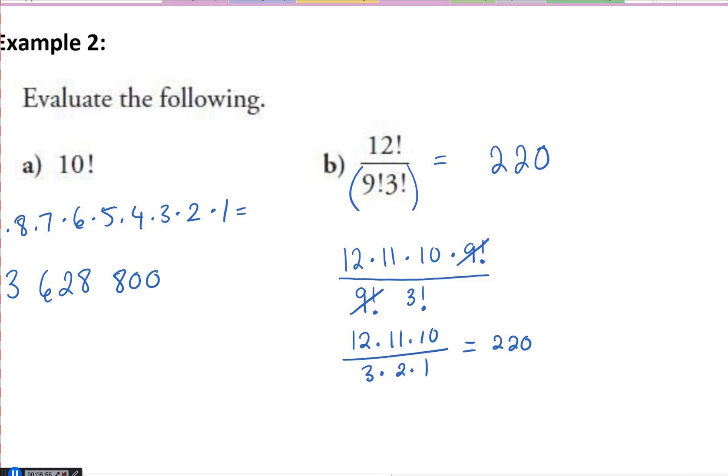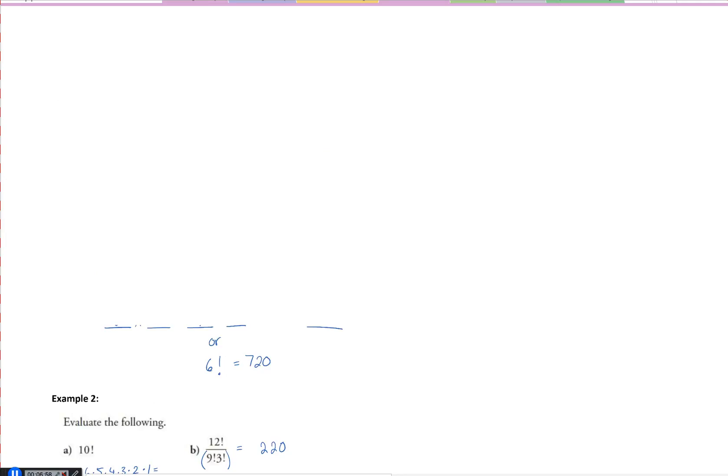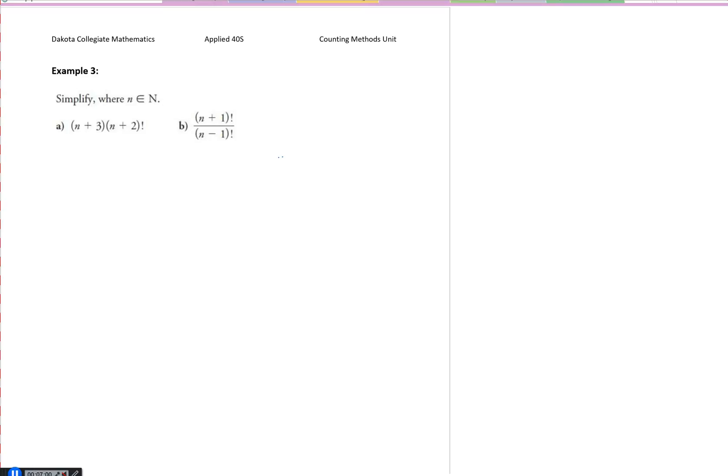So let's take a look at the example I was referring to. Example 3. This says simplify, where n belongs to the natural numbers. What are natural numbers? Those are your counting numbers that you started learning counting on. So 1, 2, 3, 4, 5. No zero, no negatives, no decimal places.